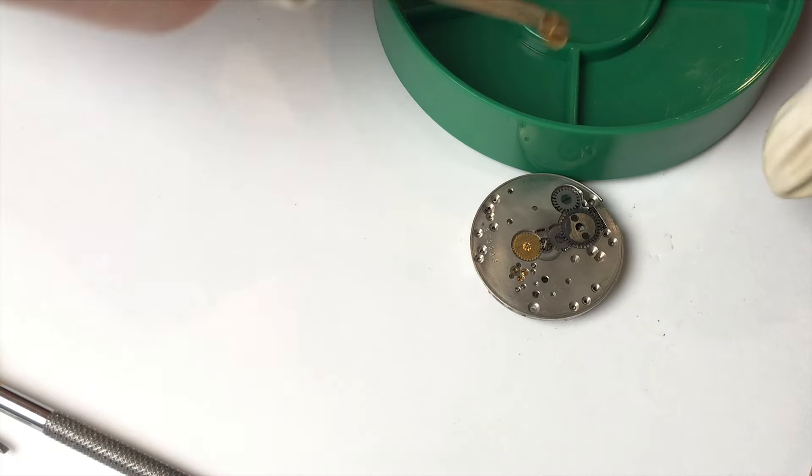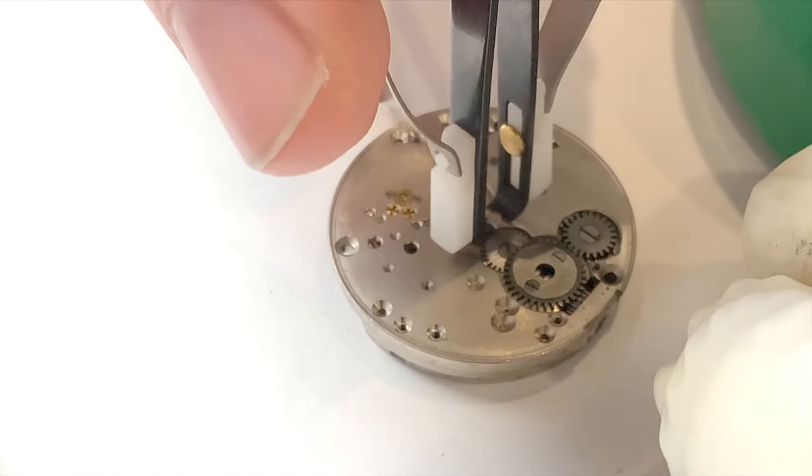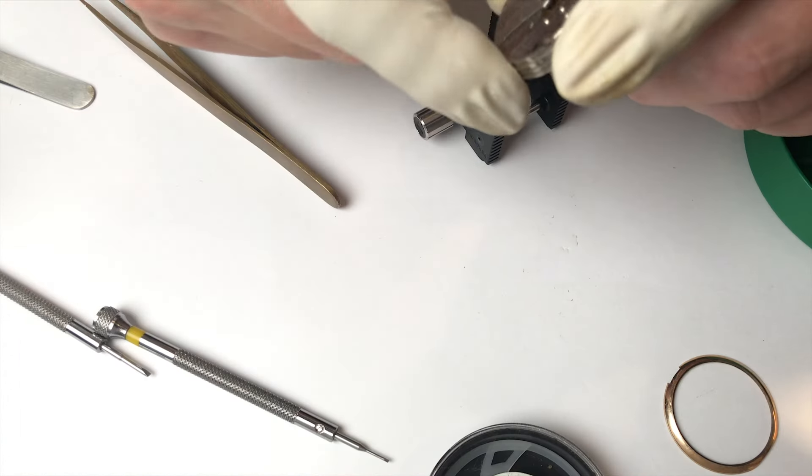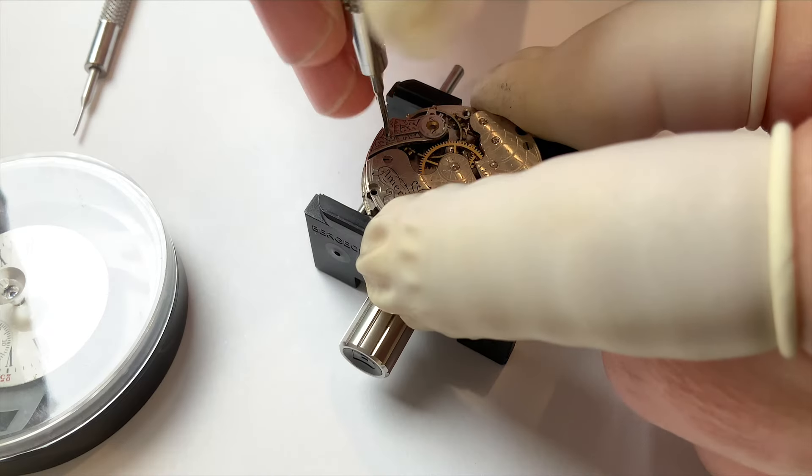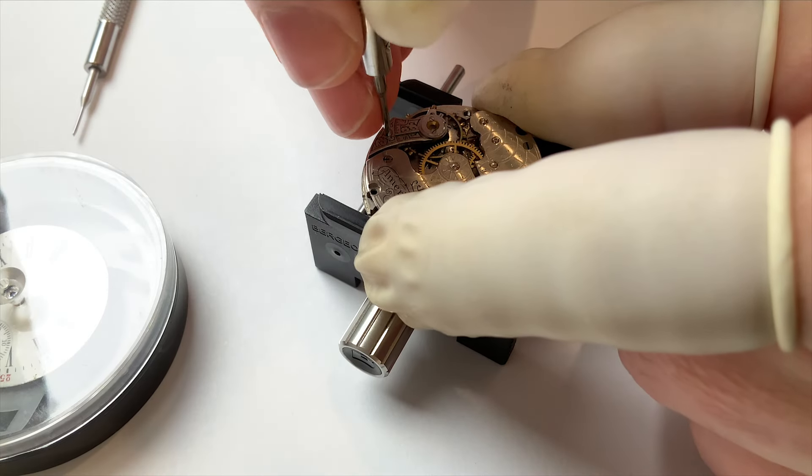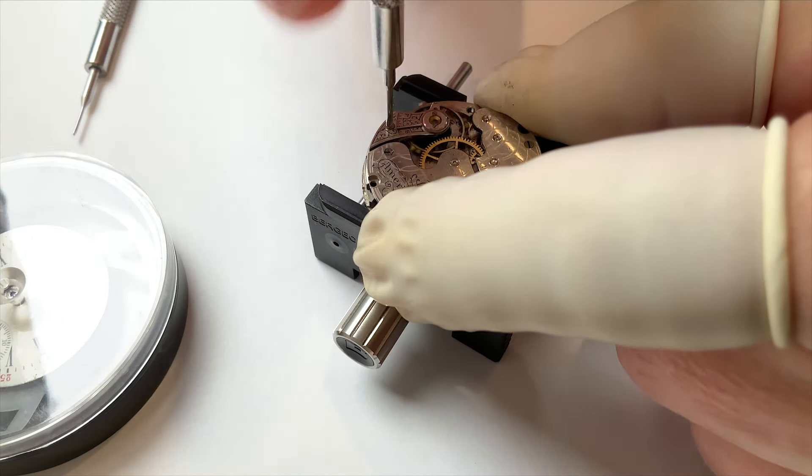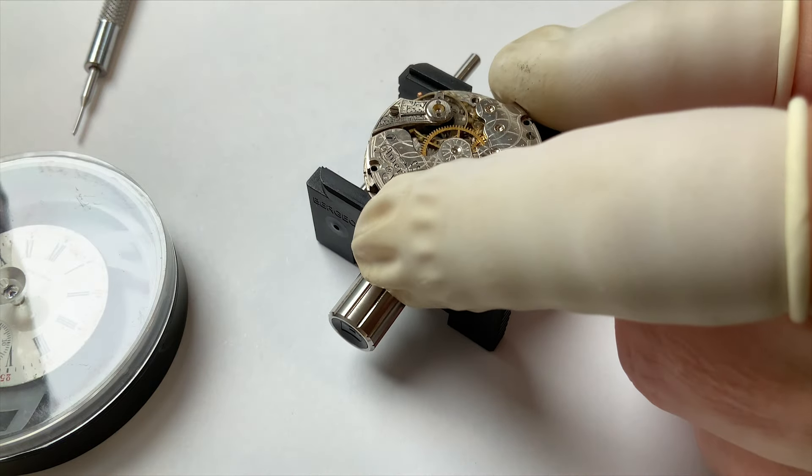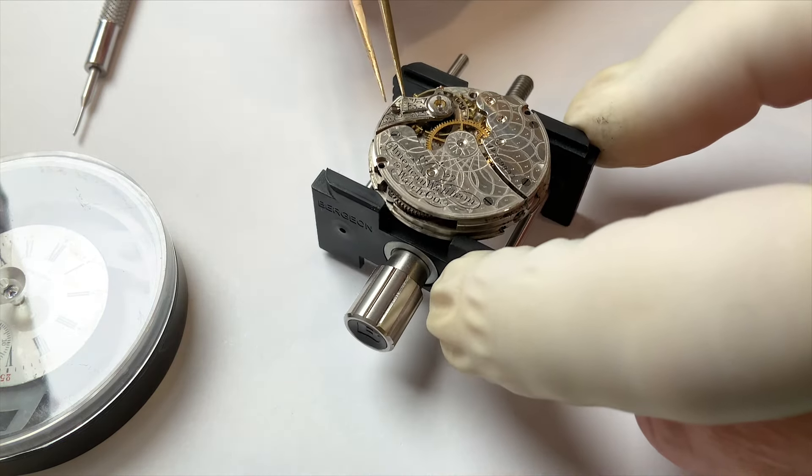The hour wheel and the minute wheel come off pretty easily. Now we'll pop off the cannon pinion with the cannon pinion removal tool, and we'll flip it back over to the train wheel side. We'll work on removing the balance cock.